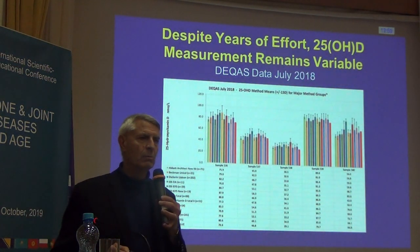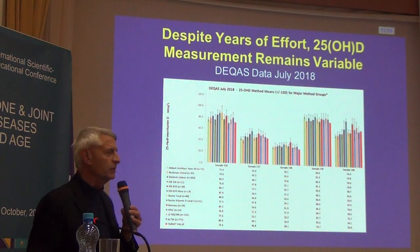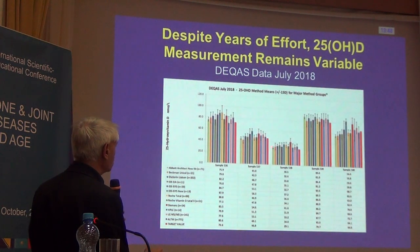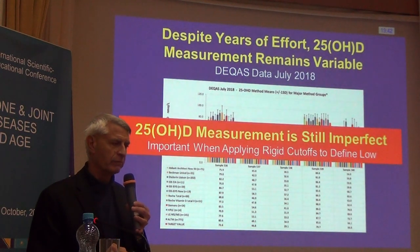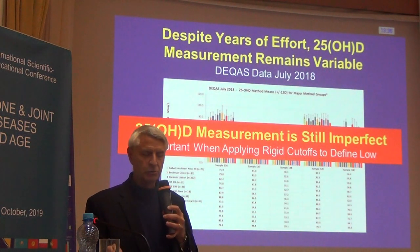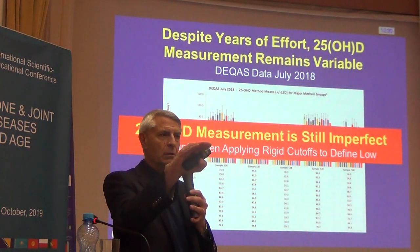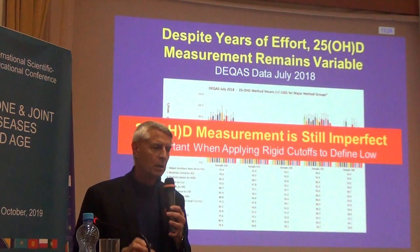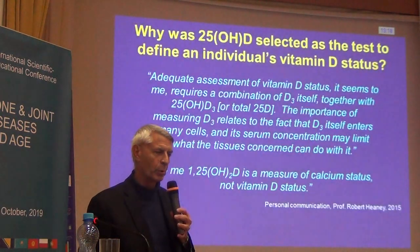Here are data from DQUAS — the Vitamin D External Quality Assessment Scheme — looking at averages across a number of assays on five sera. There is substantial variability in 25-hydroxy-D measurement. Despite years of trying, 25-hydroxy-D measurement is still imperfect. That's important when you're applying a rigid cut point of 20, 30, or 12 nanograms per milliliter — imperfect assays combined with rigid cut points create problems.